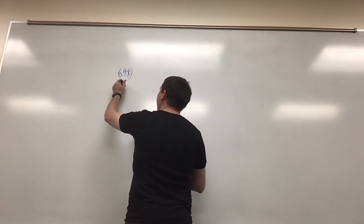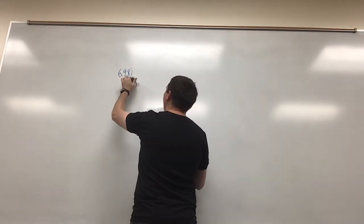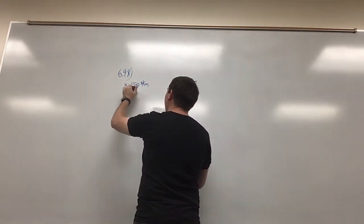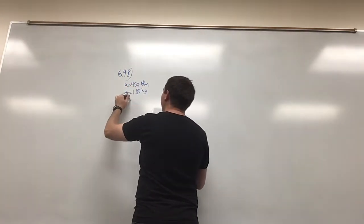So we know that k, the spring constant, is going to be equal to 450 newtons per meter. We know that the mass of the brick is equal to 1.80 kilograms, and we know the height that the brick must go is 3.6 meters.